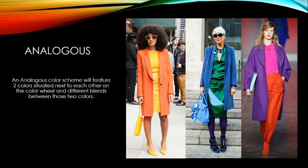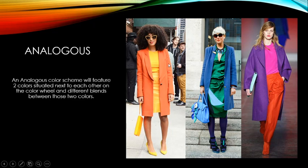An analogous color scheme features two colors situated next to each other on the color wheel and blends in between. In fashion we typically mix two to three colors per look. For example, yellows and oranges blending together in a dress and skirt, or blue and green combined with teal accessories representing the midway point between those two colors.